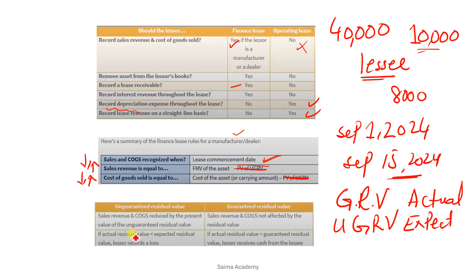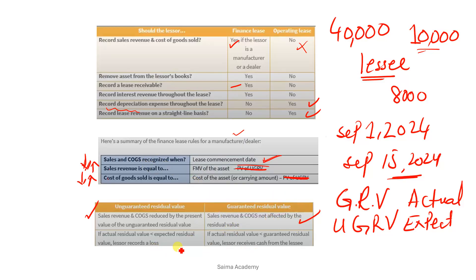Sales revenue and cost of goods sold are reduced by the present value of the unguaranteed residual value — that is what I have explained. When do these two values decrease? When we subtract the present value of the unguaranteed residual value. Sales revenue and cost of goods sold are not affected by the residual value if there is a guaranteed residual value — because we are not doing any subtraction.